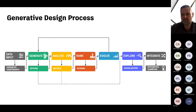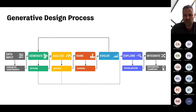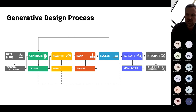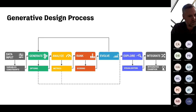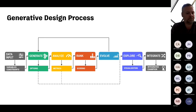The technical process of generative design is a bit more complex. We start by gathering data, generate a model from it, analyze it, rank the solutions, evolve the solutions, explore them, and then finally integrate it into our BIM model.